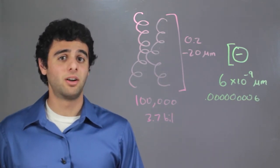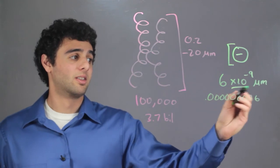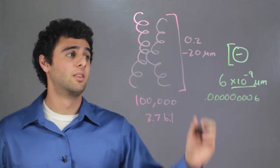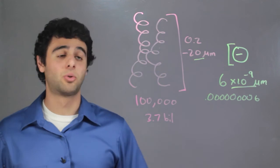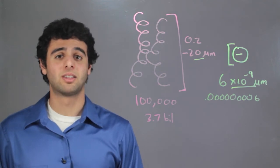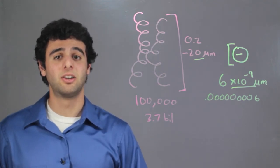So when we compare the two, 6 times 10 to the negative 9 micrometers to 20 micrometers, we can see that an electron is clearly smaller than a chromosome.